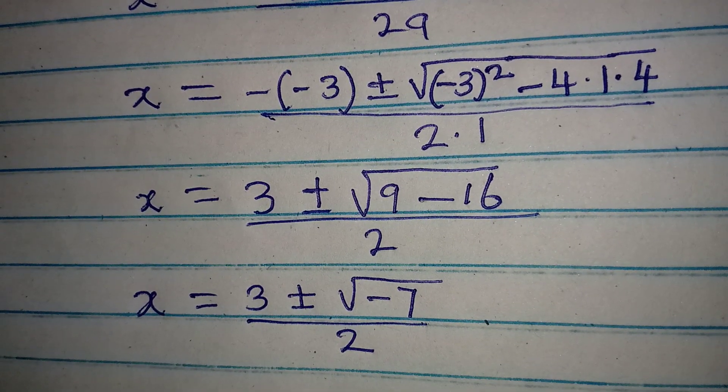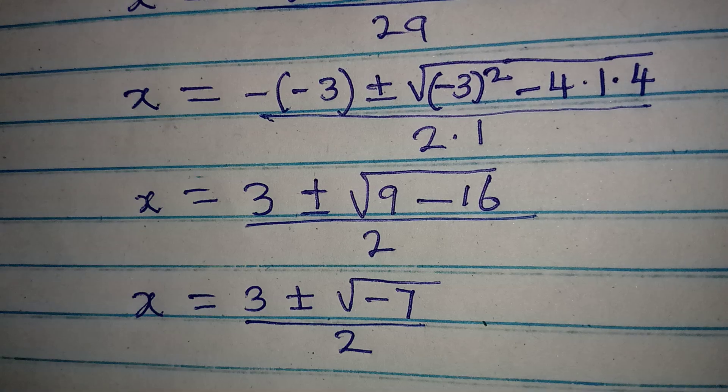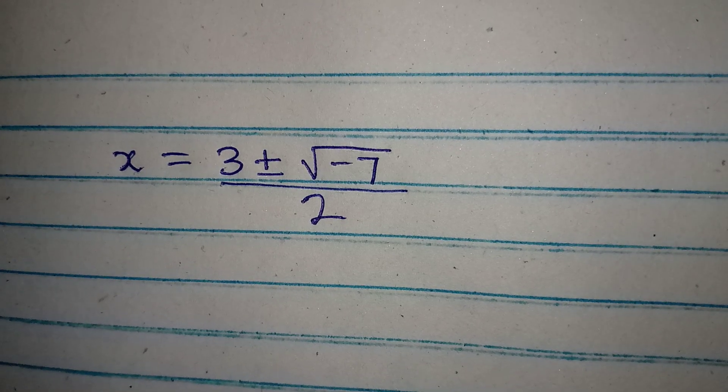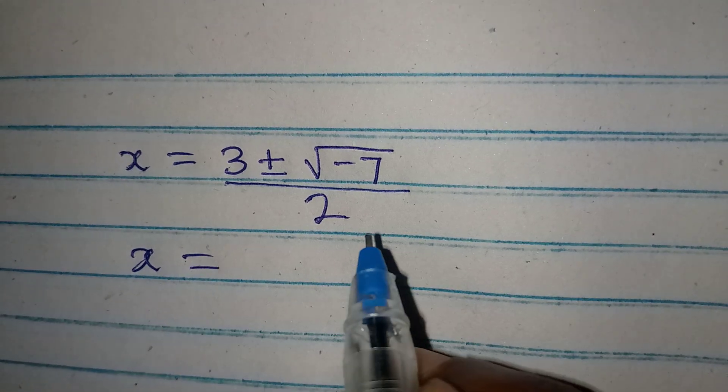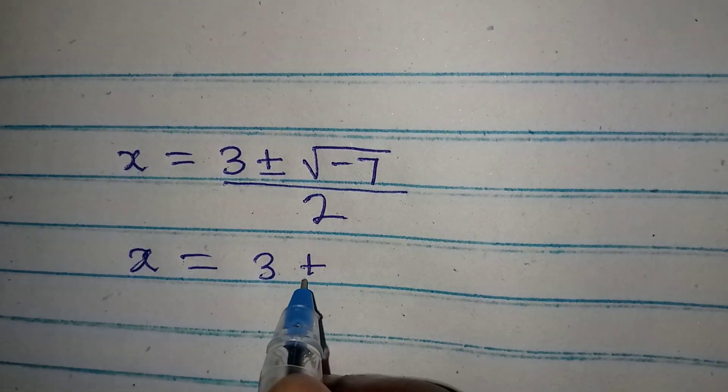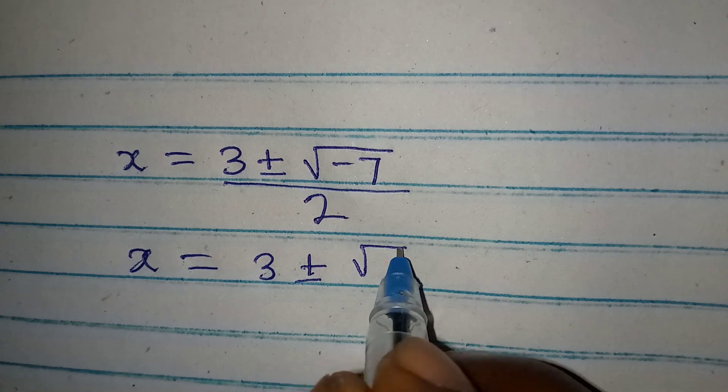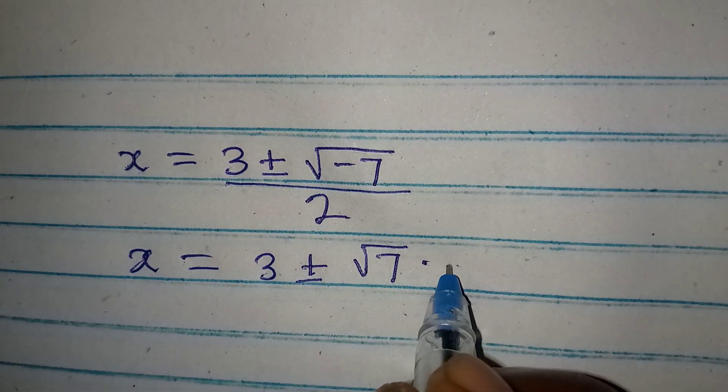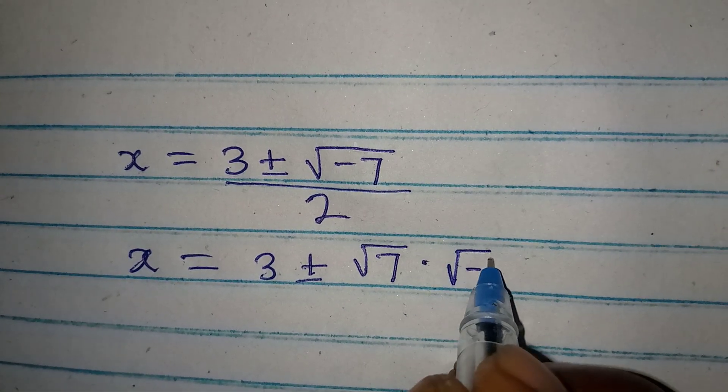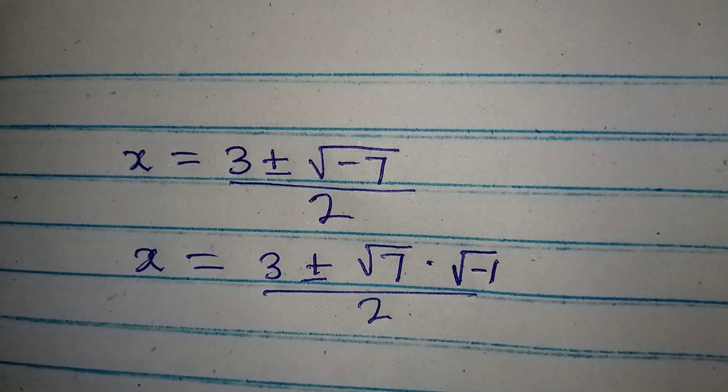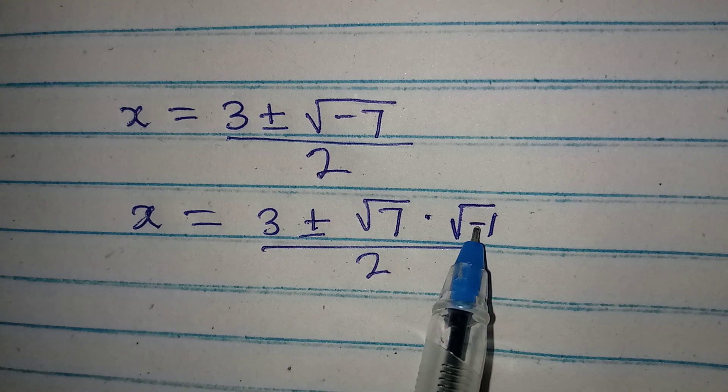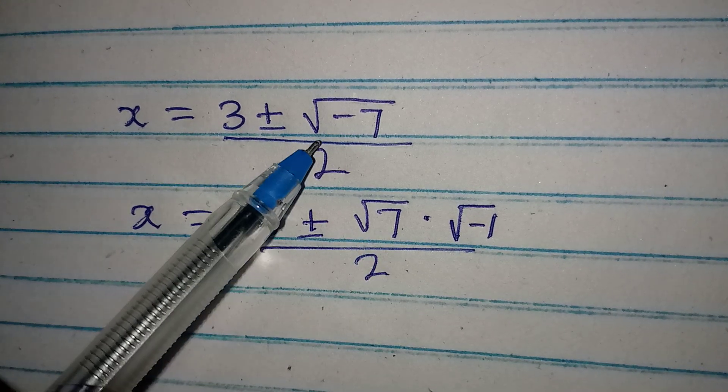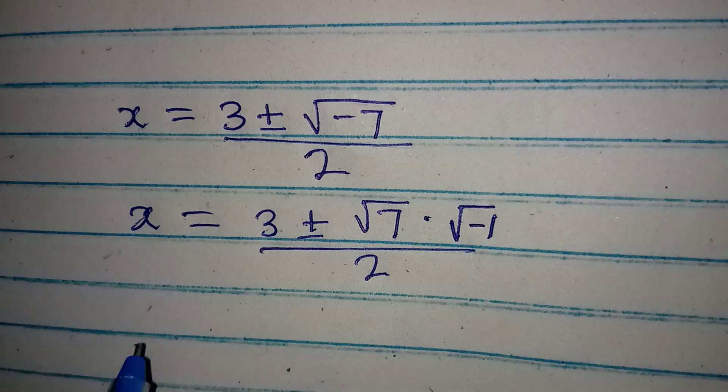To continue from here, x will be equal to 3 plus or minus square root of 7 multiplied by square root of negative 1. This is still over 2. What I have done is to pick out the negative. If you multiply this and this, you will still have square root of negative 7.